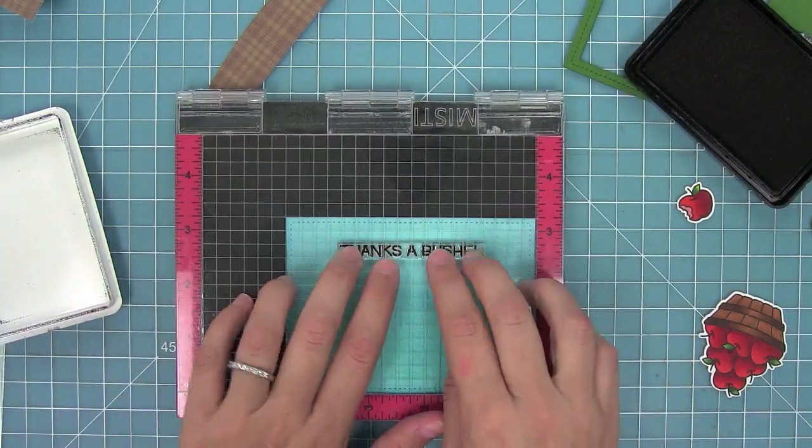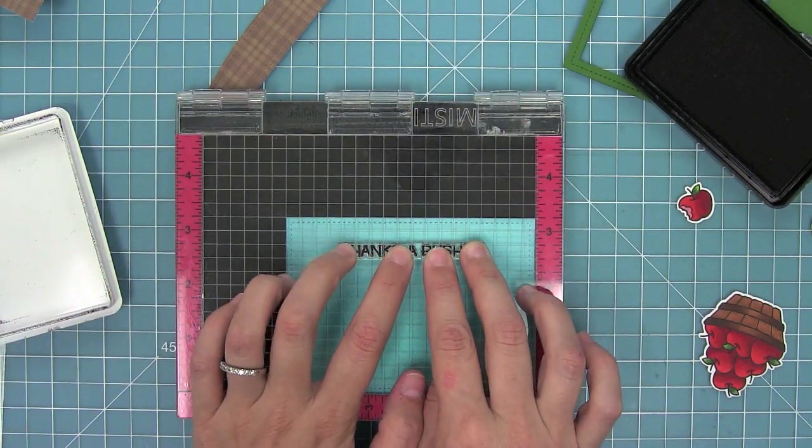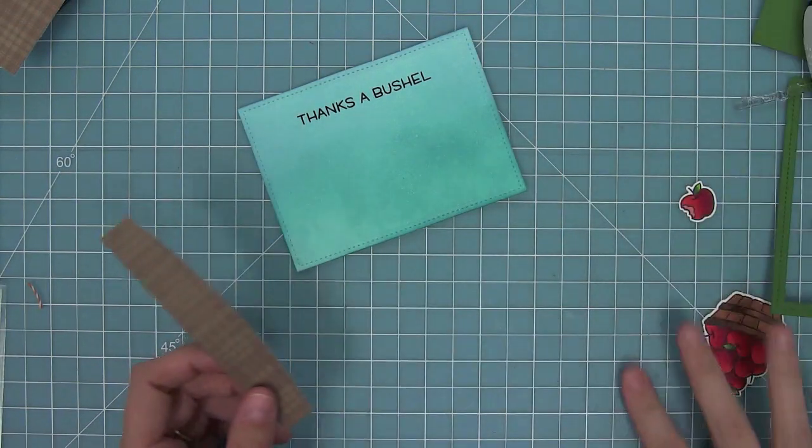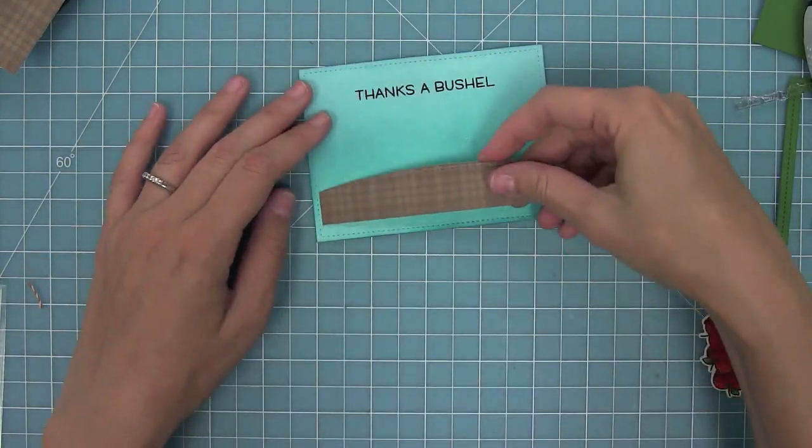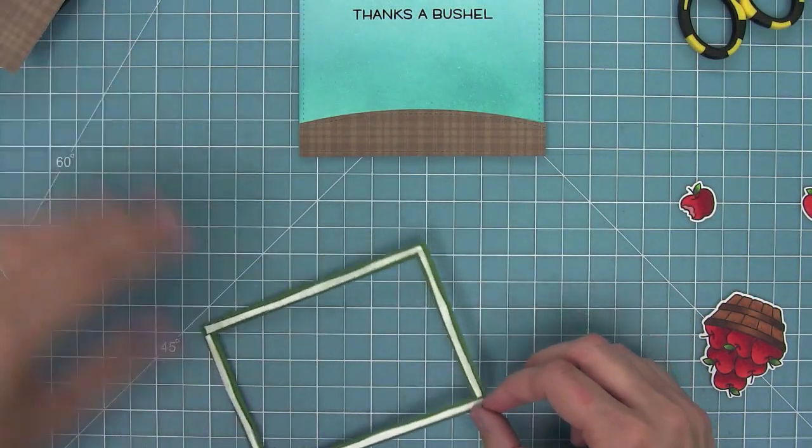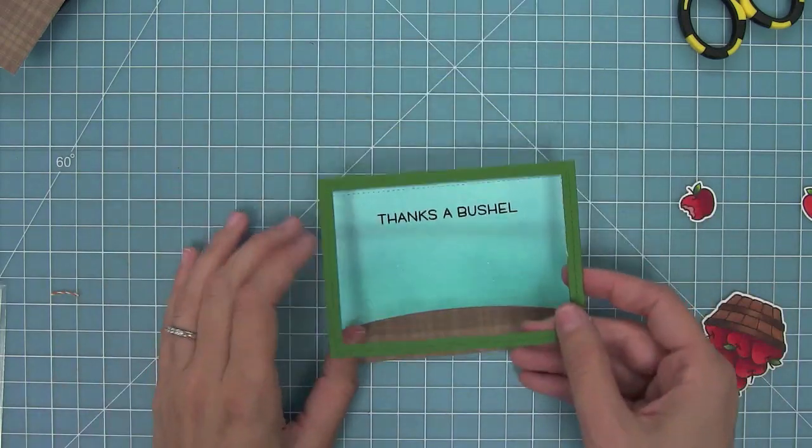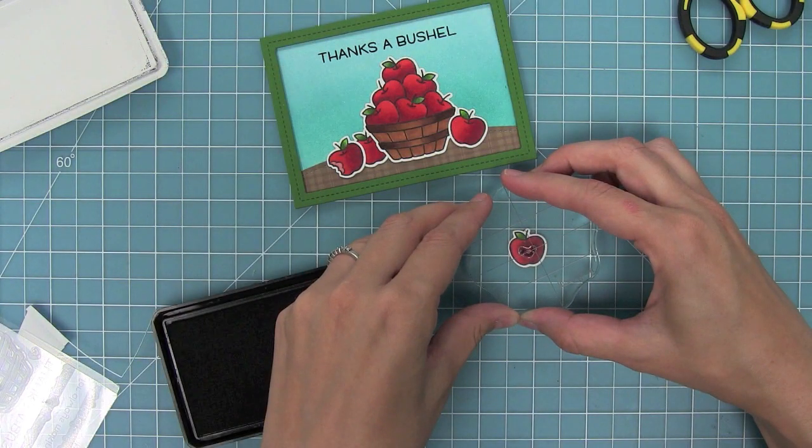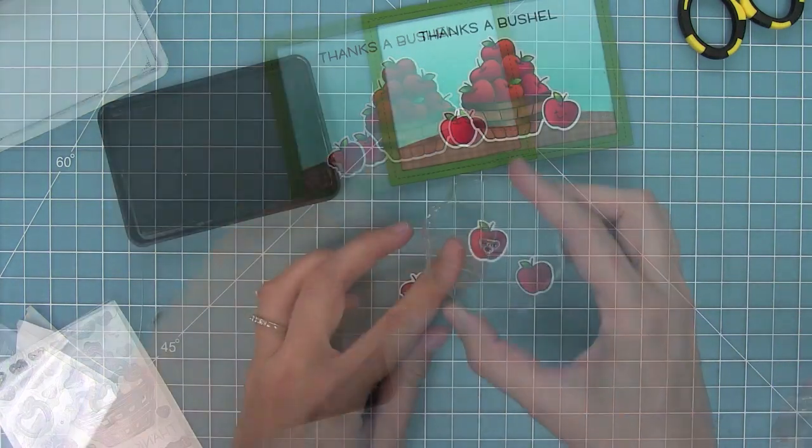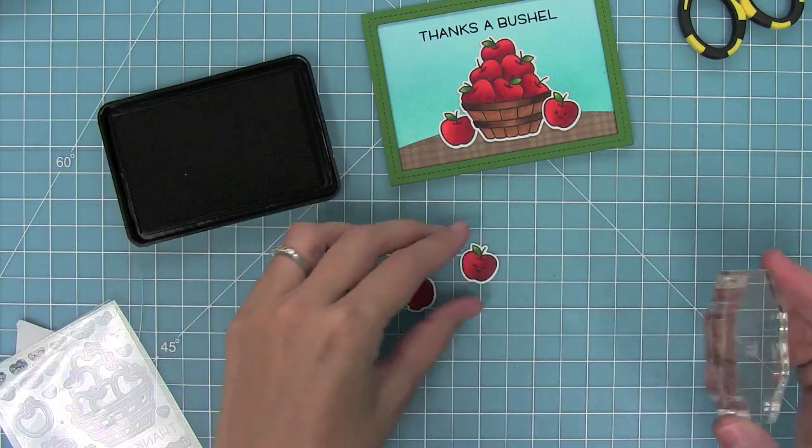Next up I'm going to stamp my thanks a bushel sentiment right onto my panel, and then I can start to build my scene. I'm going to add my hill and then that rectangle frame with some foam tape just to give it a nice little dimension. Next I've decided I needed to add some smiley faces to these apples, so I'm going to add a winky face and a smiley face to them to add a cute little fun touch to this card.